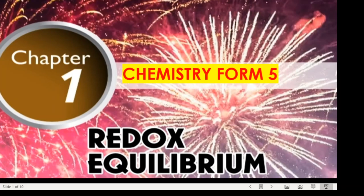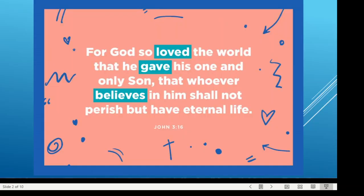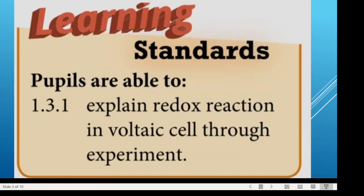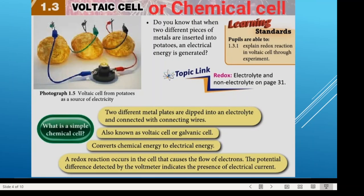Good morning and welcome back to Chemistry Form 5, Chapter 1. We will continue redox equilibrium subtopic 1.3 today: voltaic cell. Our learning standard today: you are able to explain redox reaction in a voltaic cell. A voltaic cell, or chemical cell, refers to the same thing. A simple chemical cell consists of two different metal plates dipped into an electrolyte and connected with connecting wires.